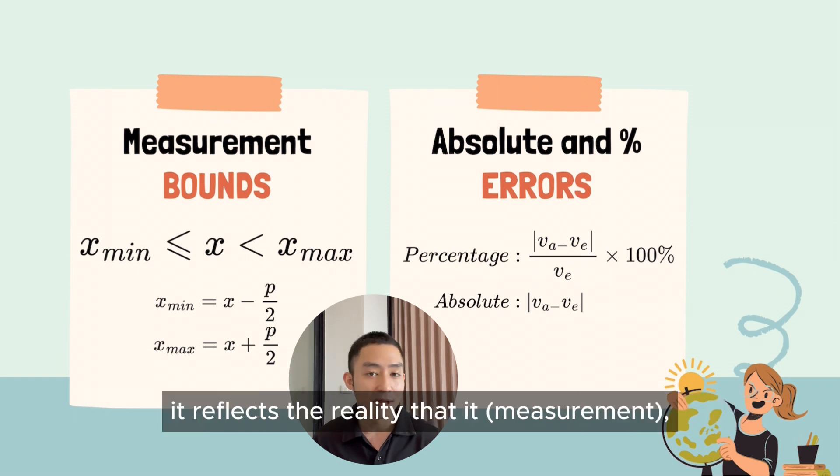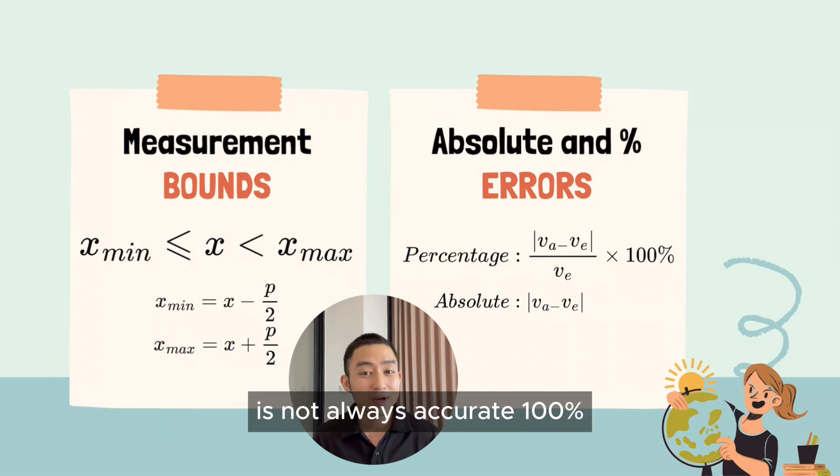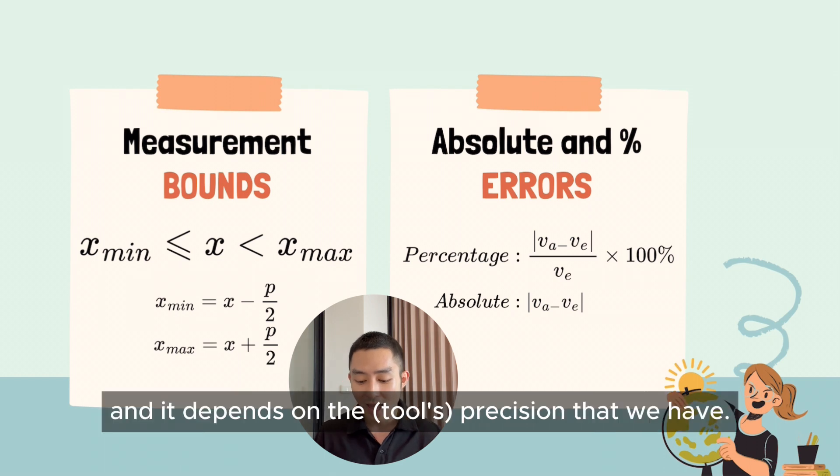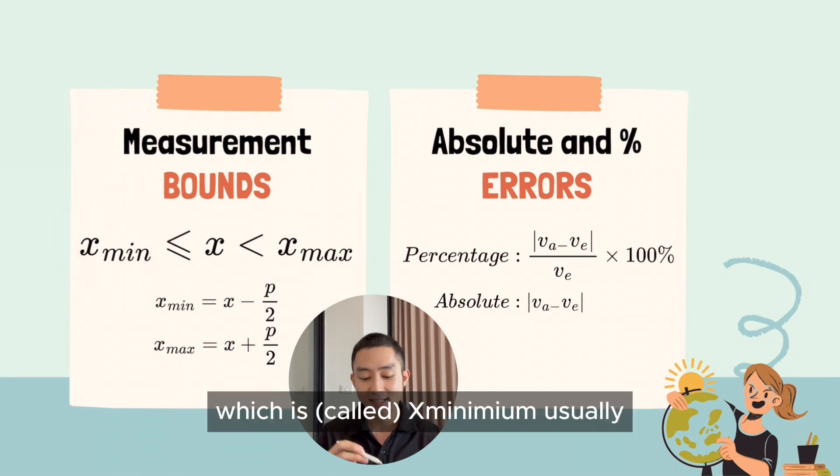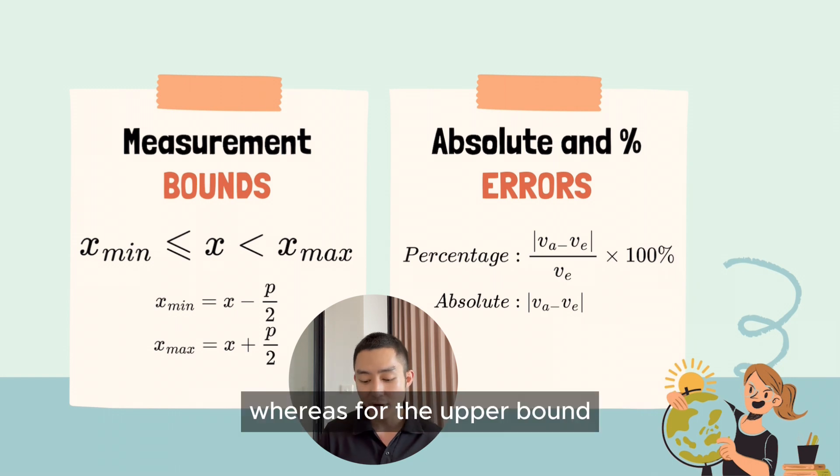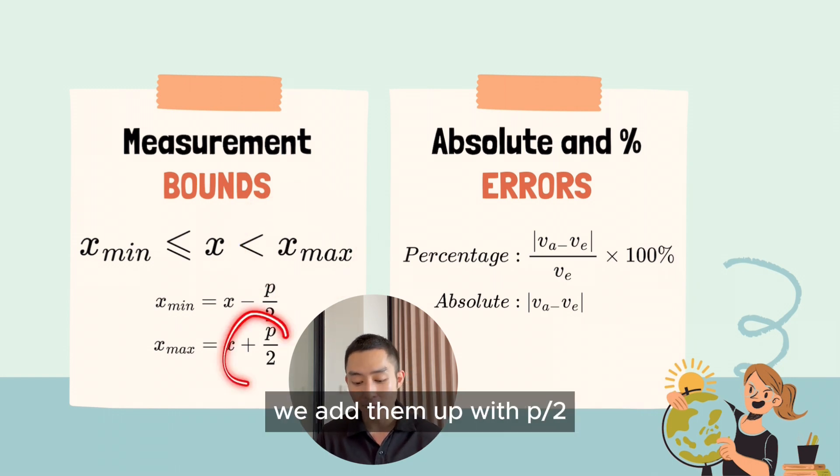For measurement bounds, it reflects the reality that it is not always 100% accurate and it depends on the precision that we have. So for the lower bound, which is X minimum usually, we subtract half of the precision. Whereas for the upper bound, we add them up.